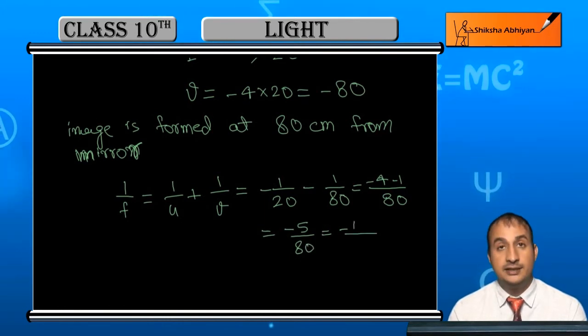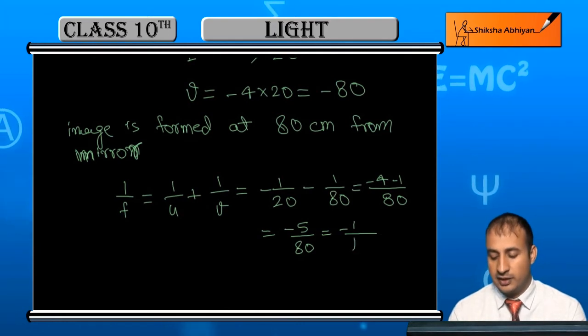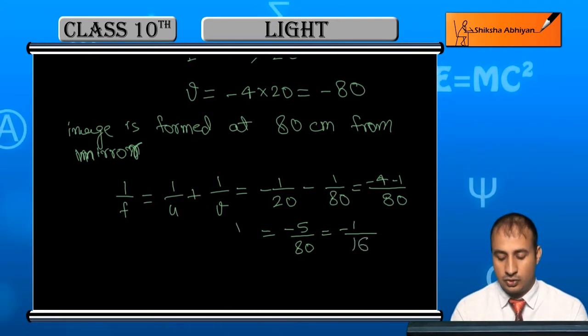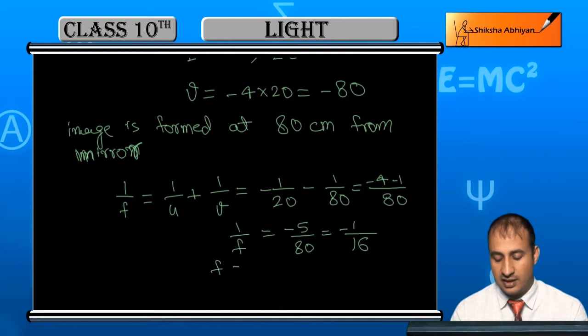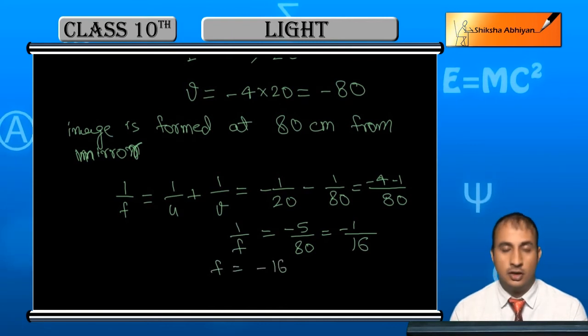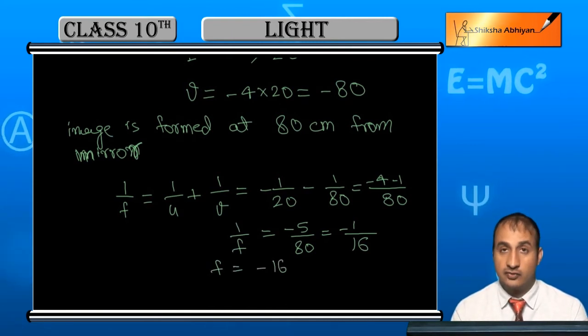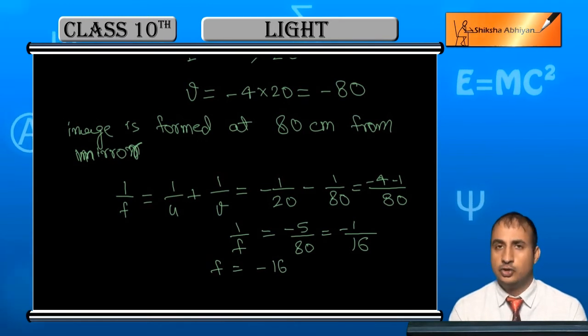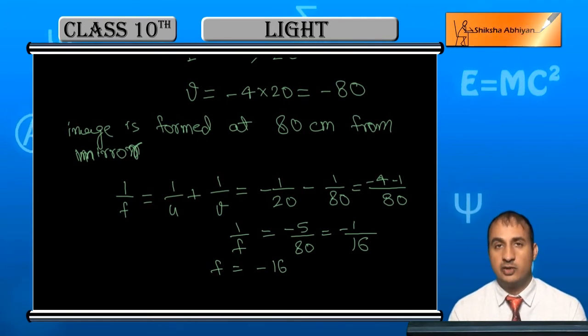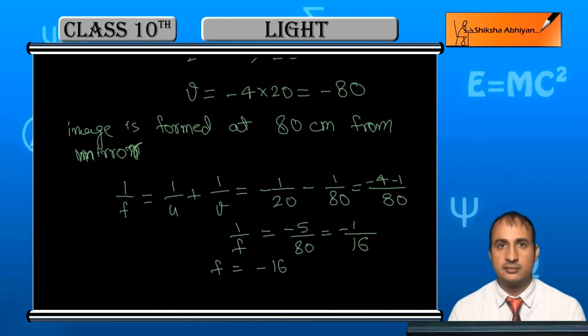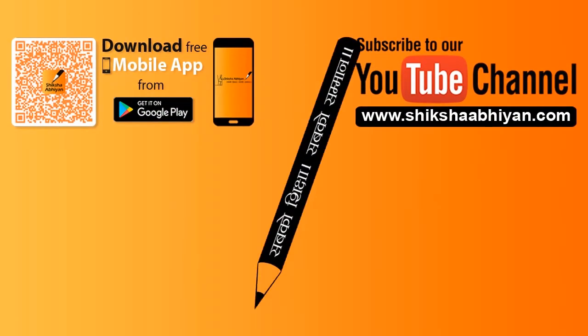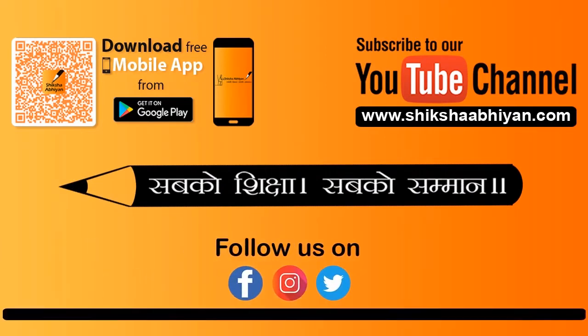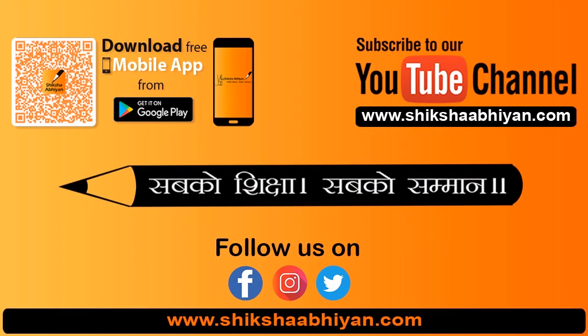So 1/f = -5/80 = -1/16. Therefore f is -16. The focal length of the mirror is 16 cm, and the negative sign means it's a concave mirror. In concave mirrors, the focal length is negative. Thank you.